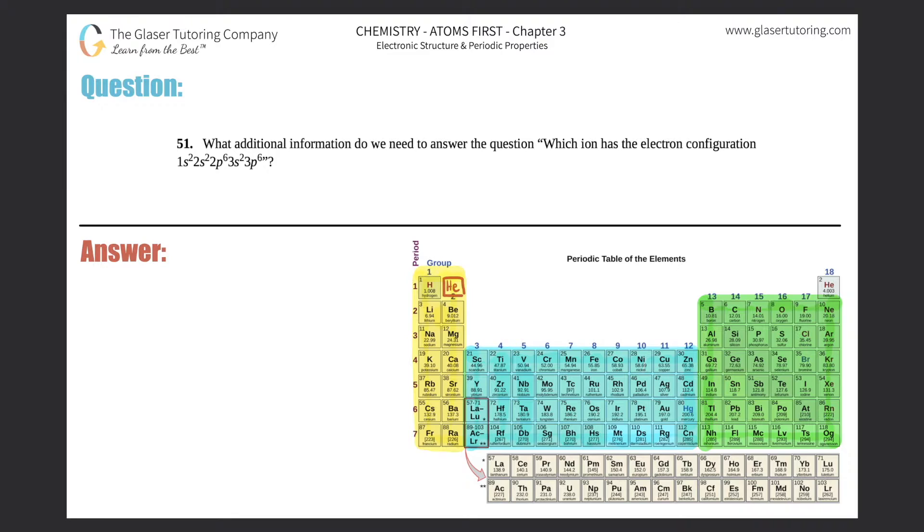Number 51: What additional information do we need to answer the question, which ion has the electron configuration 1s2 2s2 2p6 3s2 3p6? Okay, now the answer is hidden in one word that I highlighted.